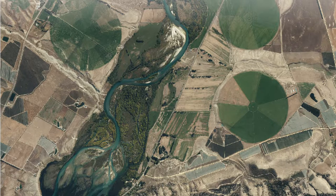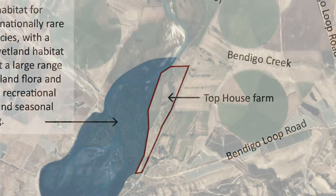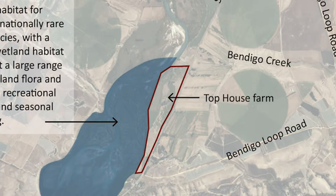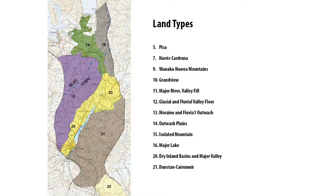The block of land we're addressing is that 42 hectares there, and you can see it's right next to the Bendigo wetland, which is a wildlife reserve and a significant wetland at the head of Lake Dunstan. The land is right next to that, so that's an interesting context.